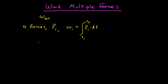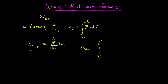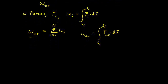If we want to calculate the total work, it can be done a couple of ways. The first way is just the sum from i equals 1 to n of all the individual works — you calculate the work done by each force and add them all together. Another way is to first calculate the net force and then do the line integral of the net force along the path the particle traveled. To explore this, let's do an example.